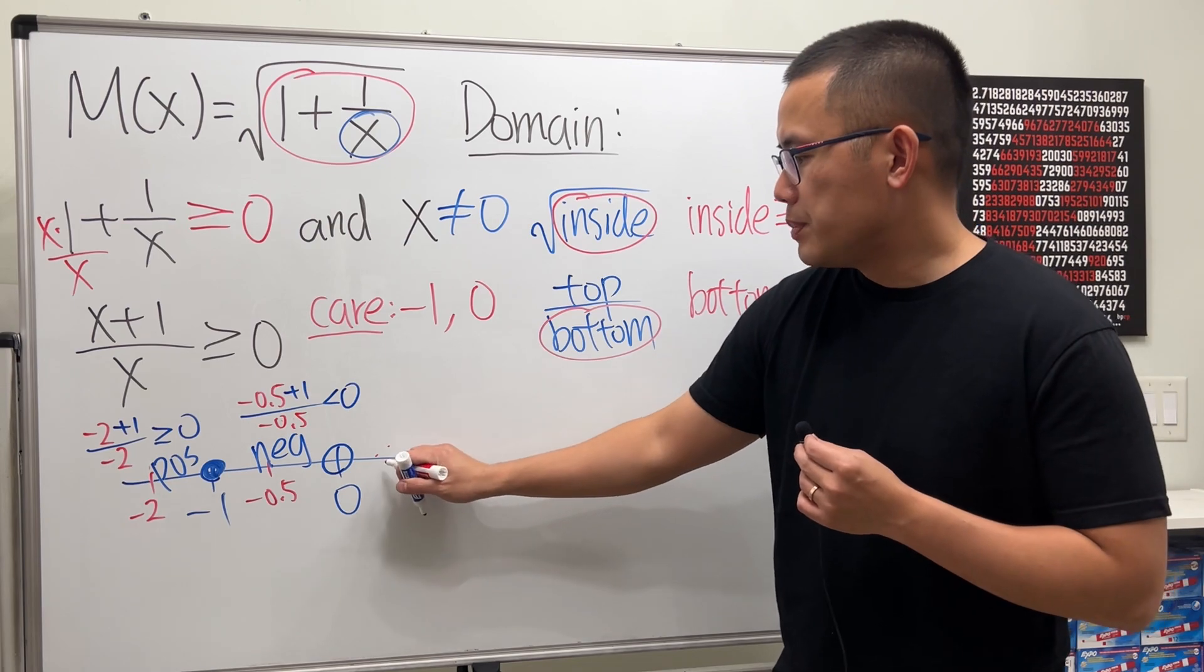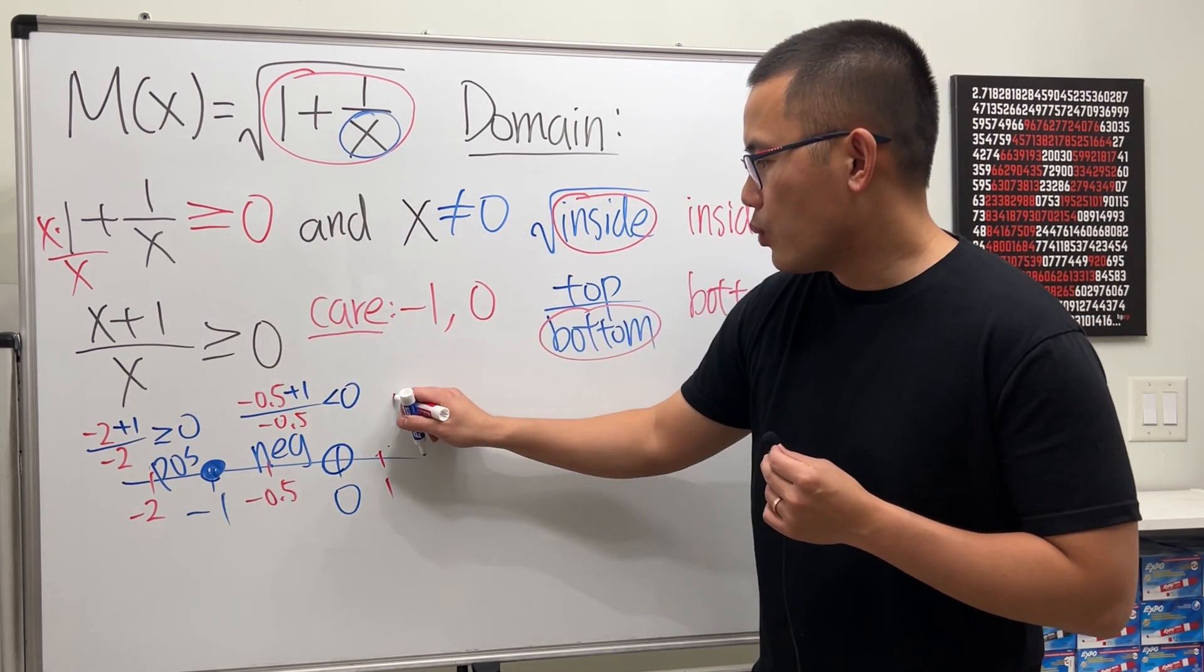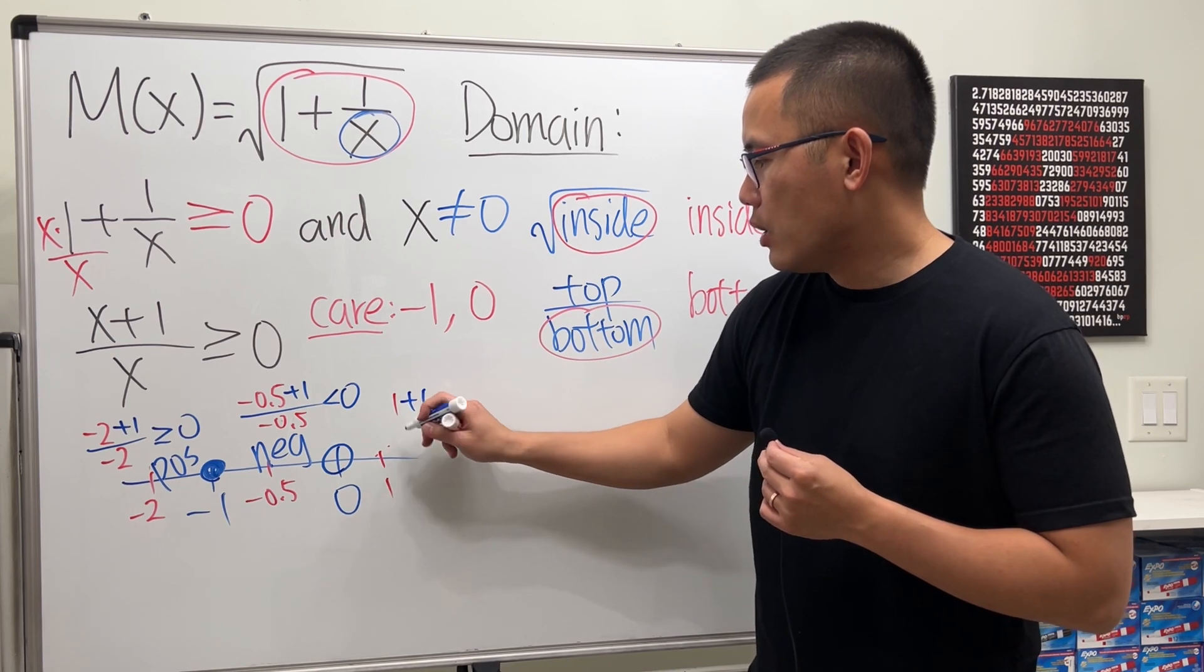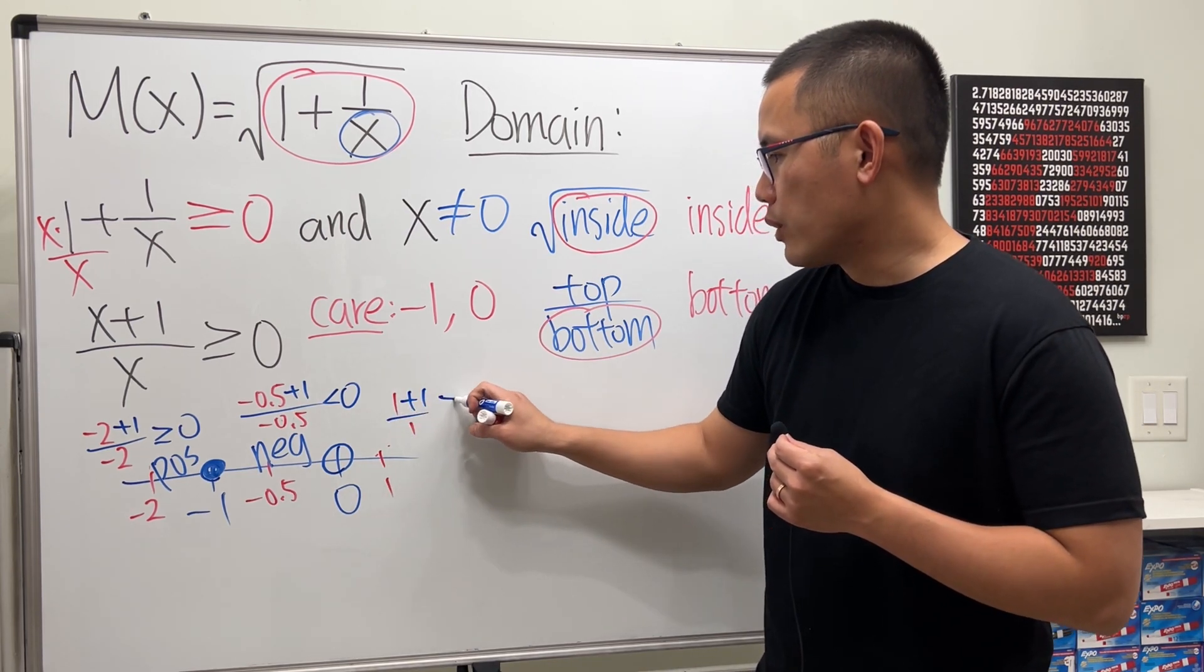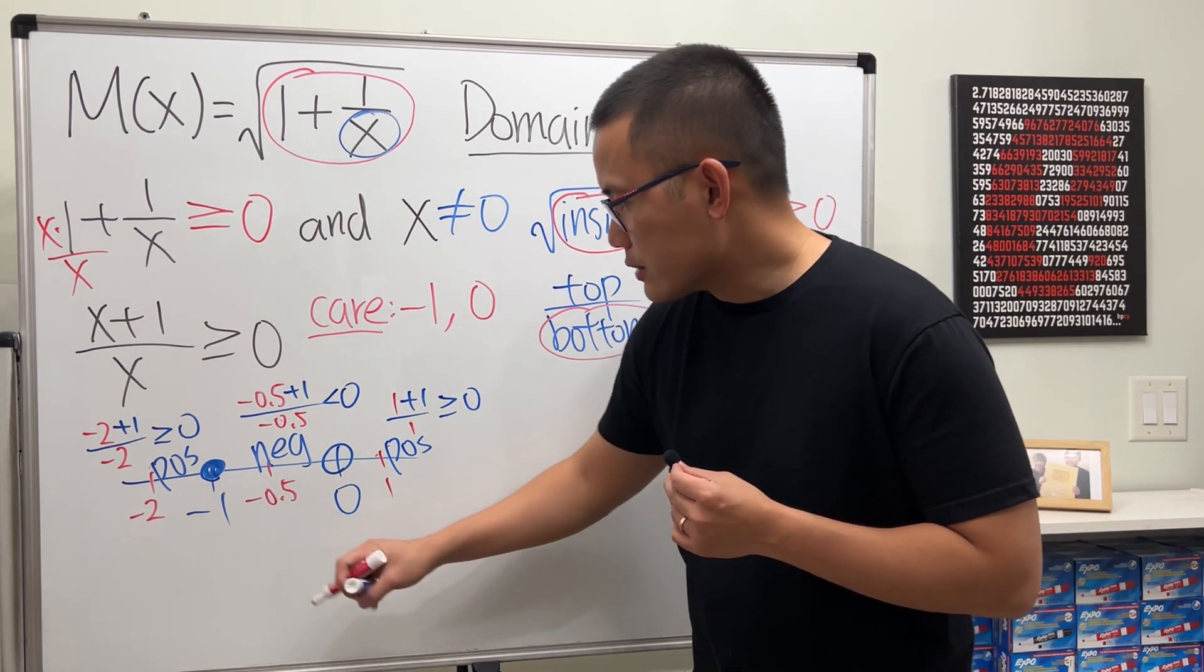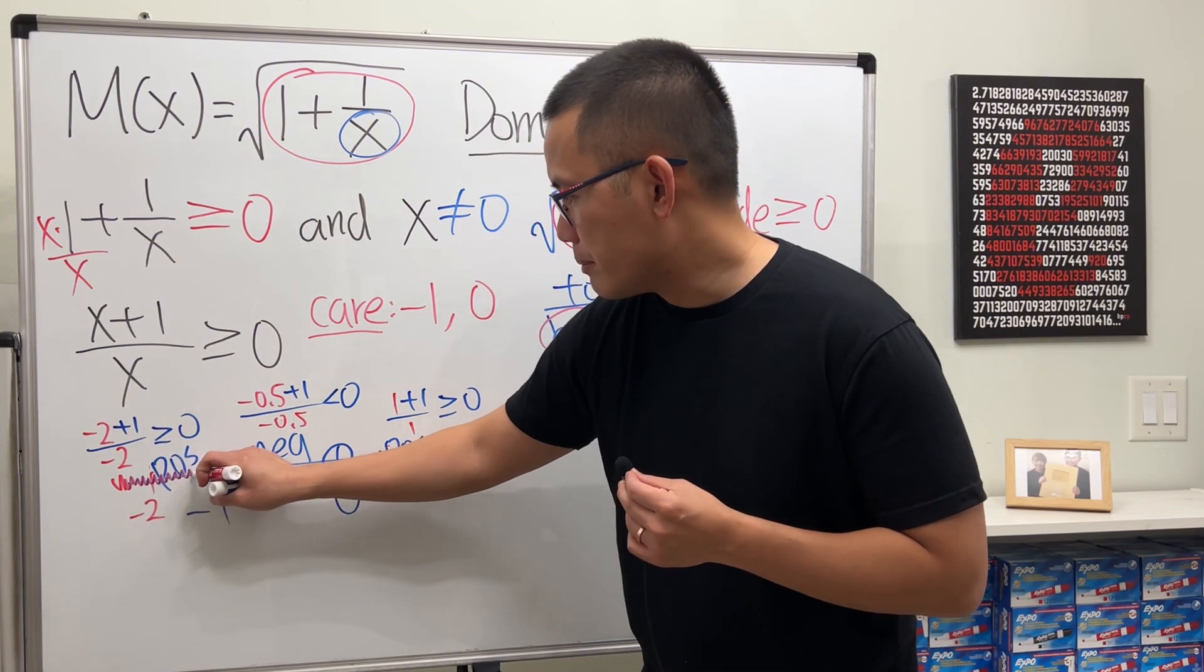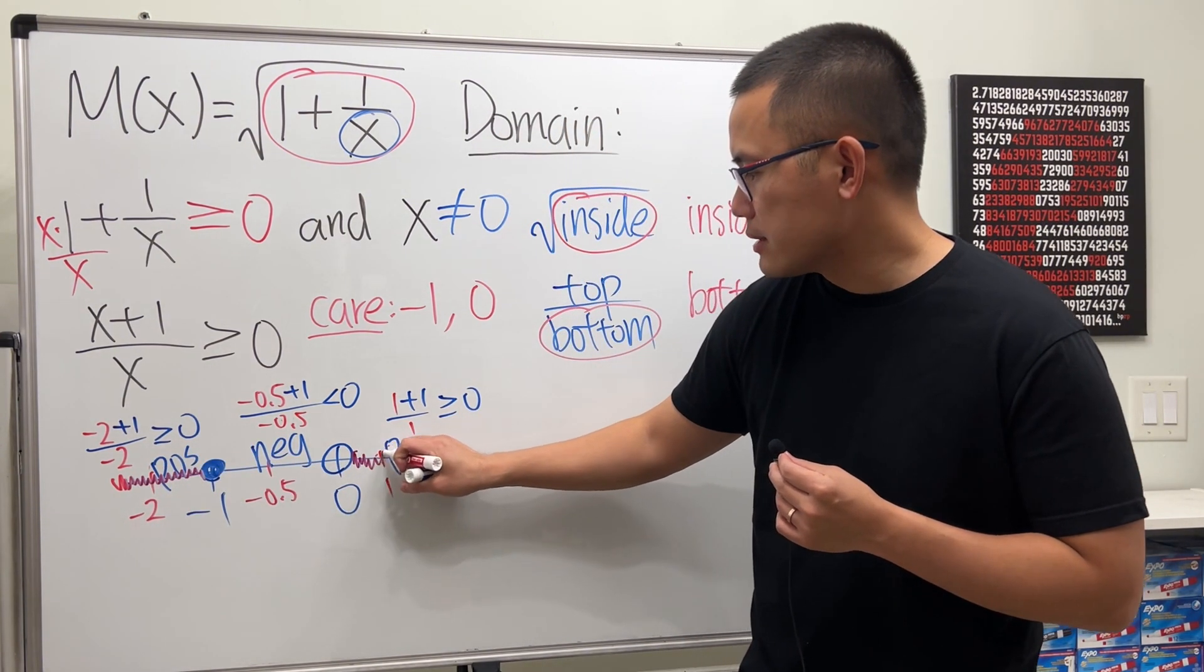And then right here at the end, let's pick a number bigger than 0. Let's say 1. And then put it here. So we get 1 plus 1 over 1, which, of course, that will be positive. So the intervals we want is this right here, the positive version, and also the positive version.